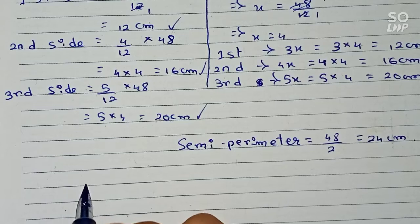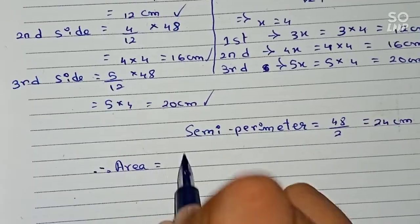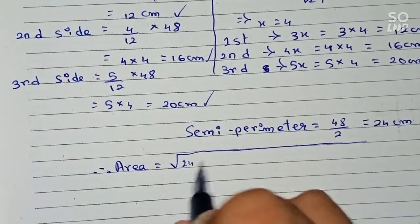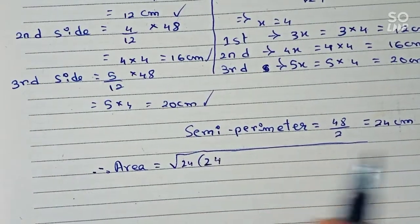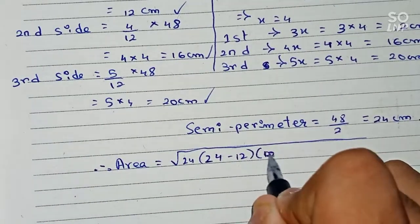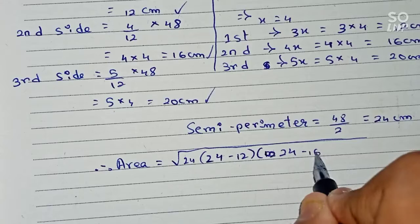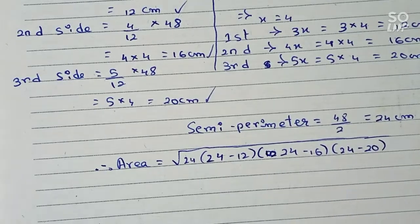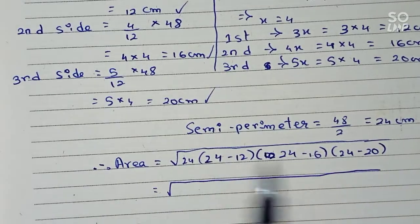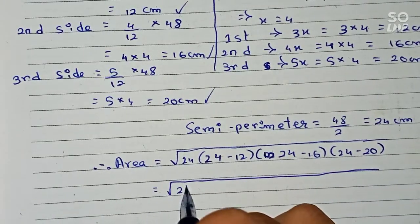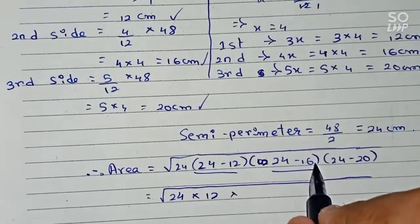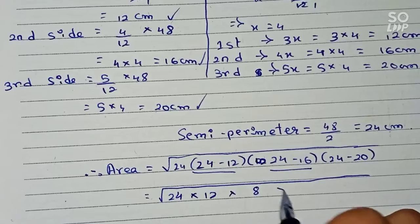Using Heron's formula, the area equals the square root of: semi-perimeter × (semi-perimeter − a) × (semi-perimeter − b) × (semi-perimeter − c), which is √(24 × (24−12) × (24−16) × (24−20)) = √(24 × 12 × 8 × 4).